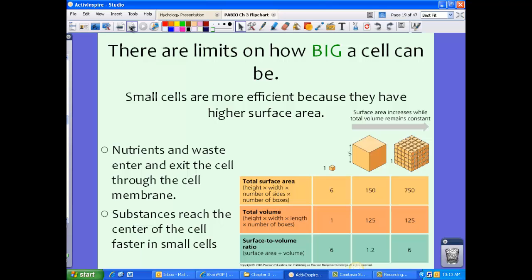So what happens is as the cell increases, as it grows, it really reaches a maximum size because substances that are smaller tend to reach the center of the cell faster. So we want that fast efficiency for these things to move around the cell. If the cell was huge, the substances would take a long time to reach the things inside the cells, those organelles.